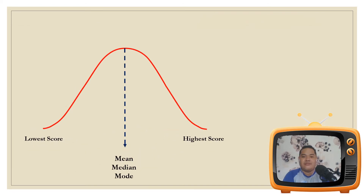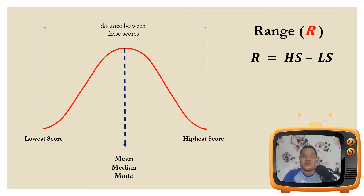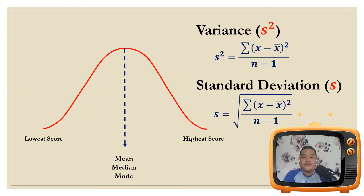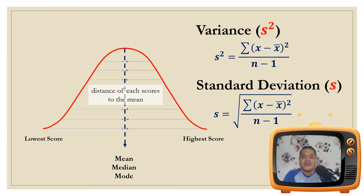To recap: for the range, all you have to do is get the distance between the lowest and the highest scores — that is, highest score minus the lowest score. Variance and standard deviation, on the other hand, involve getting the distance of each score to the mean. For the variance, that is the squared distance, and the standard deviation is just the distance.